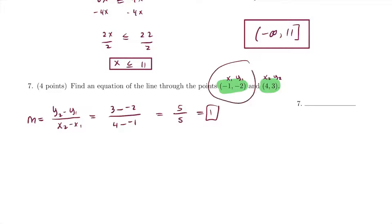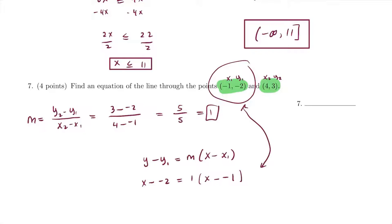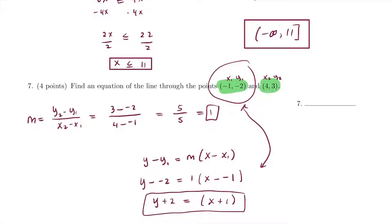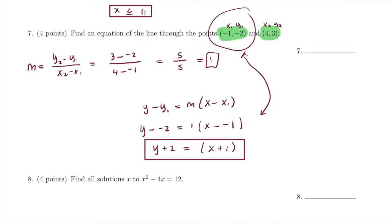Using point-slope form with the point (−1, 2): y minus y₁ equals m times (x minus x₁). That gives y minus (−2) equals 1 times (x minus (−1)), so y plus 2 equals x plus 1. That's the equation of the line.